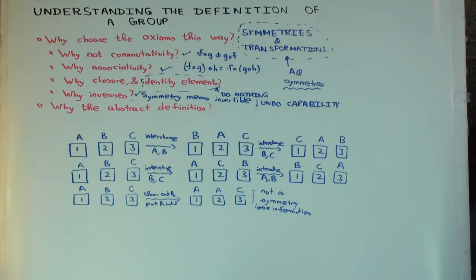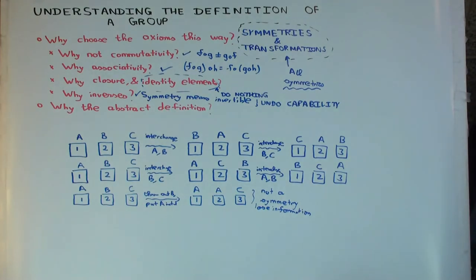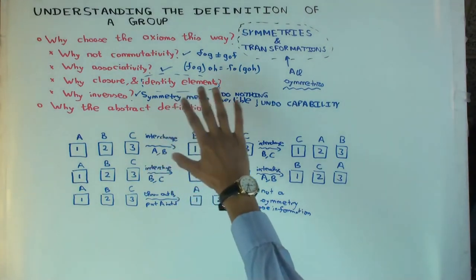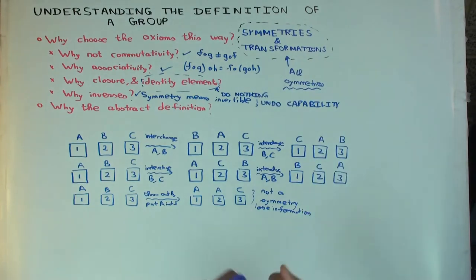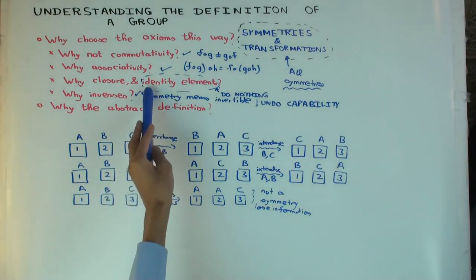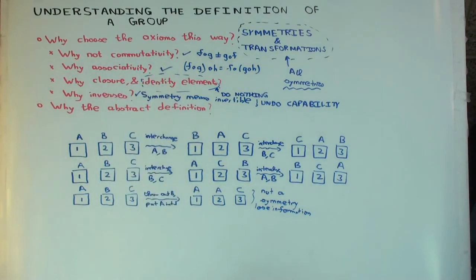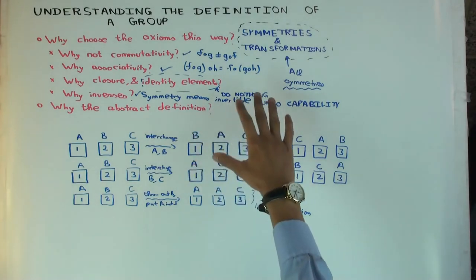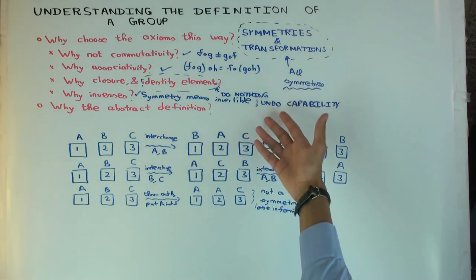So groups capture symmetries of structures — transformations which are invertible. You have associativity because function composition is associative. You don't necessarily have commutativity because function composition is not commutative in general. You have closure because you want to capture all symmetries — anything you can get by composing symmetries should also be a symmetry. You include the identity element because closure requires it. And you have inverses because you want to capture only symmetries which can be inverted — that's what it means to be a symmetry.